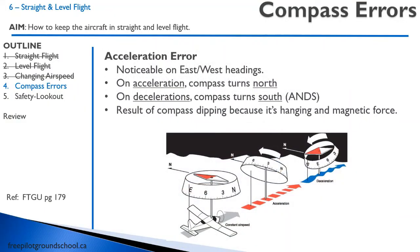We also have acceleration error, which is particularly noticeable on east and west headings. When we accelerate, the compass will turn to the north, and on deceleration the compass turns south — acceleration north, deceleration south. The reason we have acceleration error is the result of the compass dipping; it's hanging and there is a magnetic force. When we add these two vectors together, this is the result, as shown in the diagram.